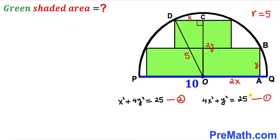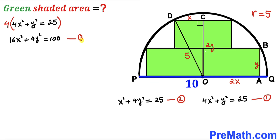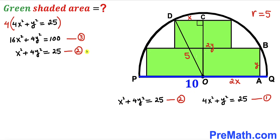Now let's focus on Equation 1: 4x² + y² = 25. I'm going to multiply both sides by 4 to get 16x² + 4y² = 100, and I'll label this as Equation 3. Equation 2 is: x² + 4y² = 25.